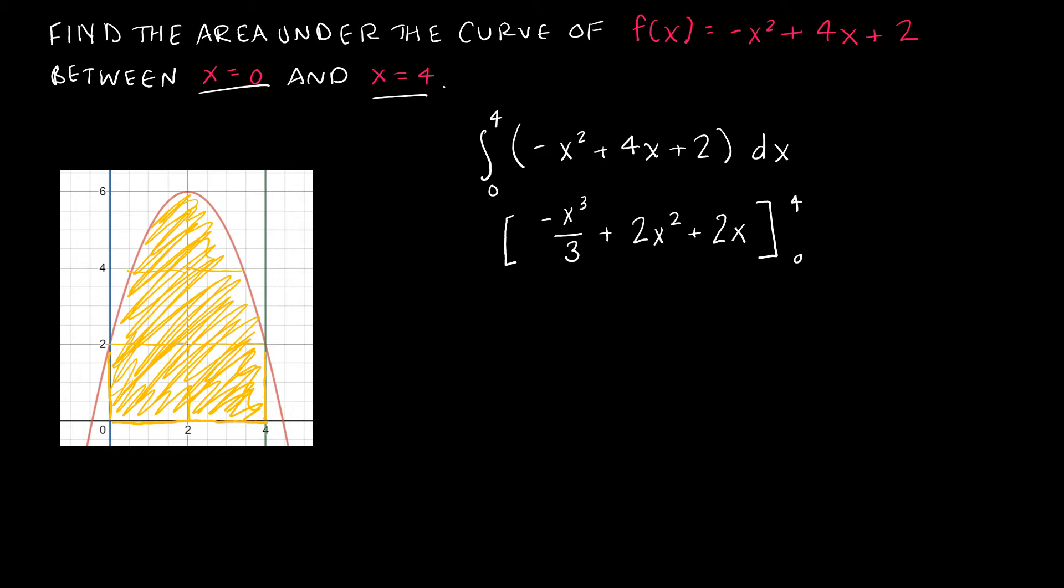So from here I'm now going to simply do the substitution by taking -4³/3 + 2(4²) + 2(4). And then minus, and I can see by plugging in 0 I'm going to get 0 + 0 + 0, so I'm not going to write all of that out.